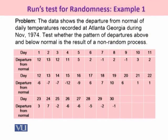So, this data that is being shown to you, it is a departure from normal of daily temperatures recorded at Atlanta, Georgia during November 1974. You are required to test whether the pattern of departures above and below normal is the result of a non-random process. Now, if you can see, departure from normal temperatures are being calculated, some are positive where some of them are negative. So by taking this data, we are required to calculate the runs on the basis of the positive and negative deviations or departure from the normal temperature.